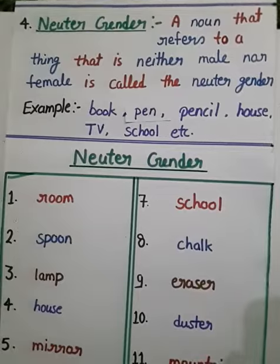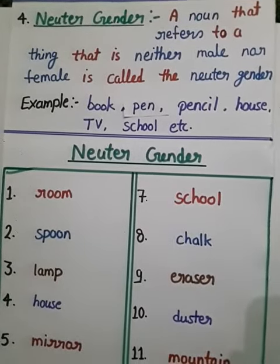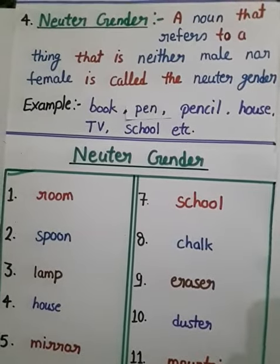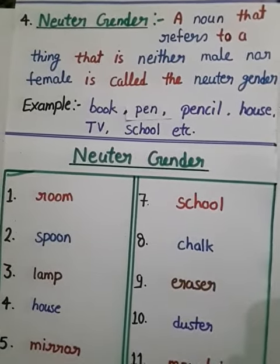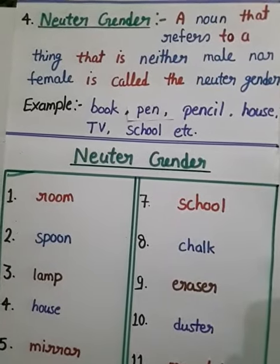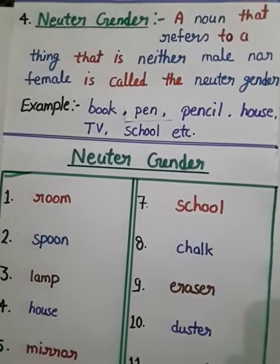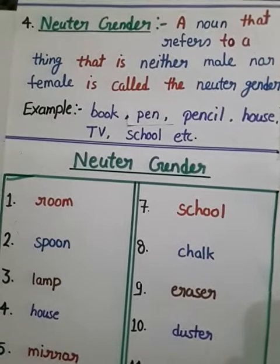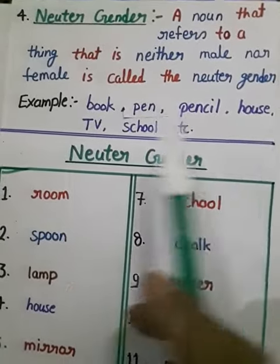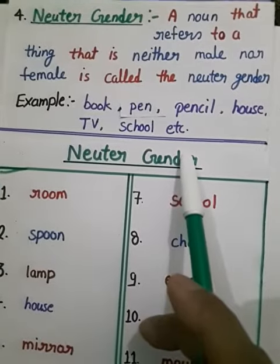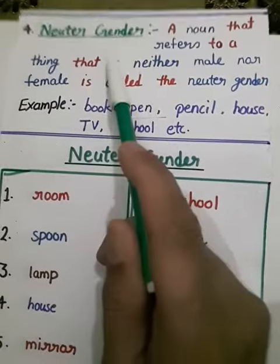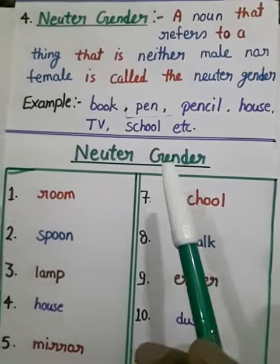If the noun is neither male nor female, then it is neuter gender. All objects and non-living things are neuter gender. Non-living things — you know very well: book, pen, pencil, house, TV, school, etc. So all these things are non-living things, and all non-living things are in neuter gender. All objects are also neuter gender.